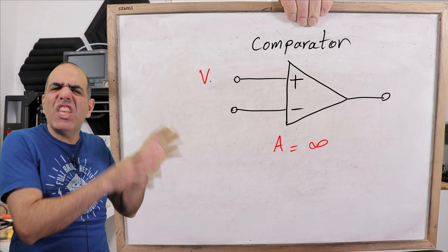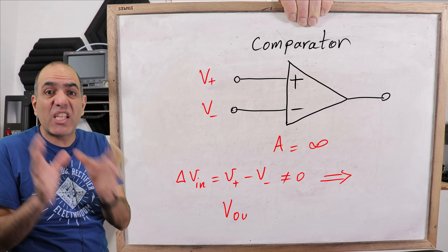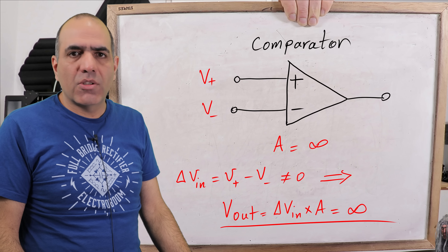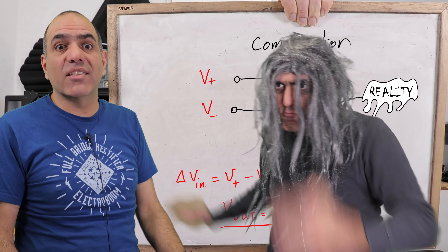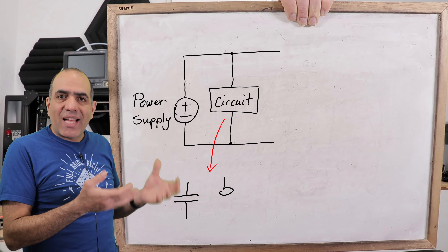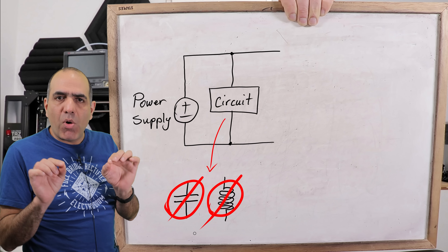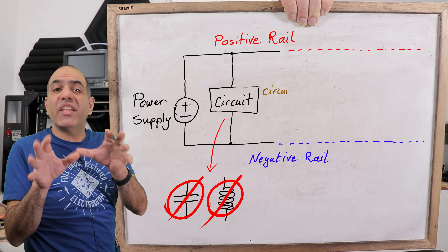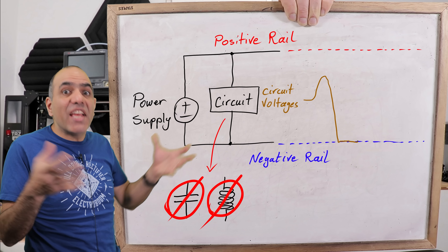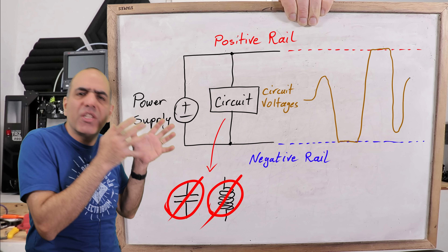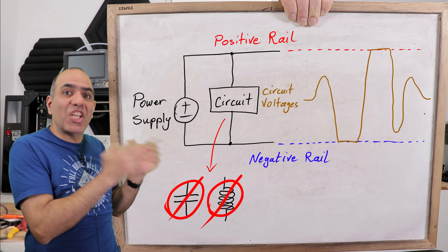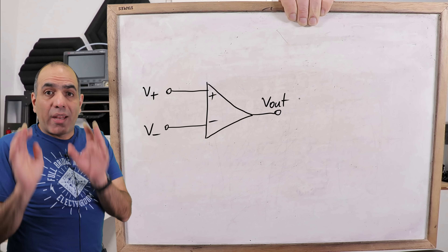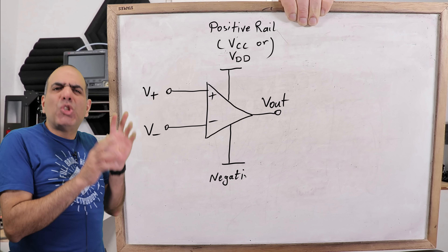What can we use it for as-is? Only one way — as a comparator. With a gain of infinity, any non-zero input voltage difference just gives a positive or negative infinity. In any circuit without capacitance and inductance — components that can store and release energy — the voltages of the circuit stay within the supply voltages, or rails as we call them, that power the circuit. Op-amps are one such circuit.